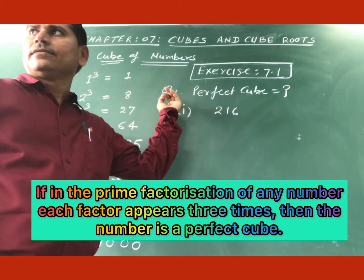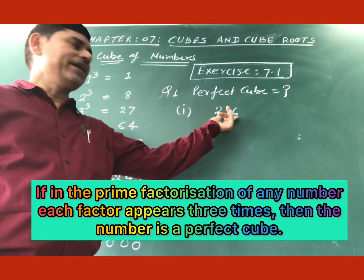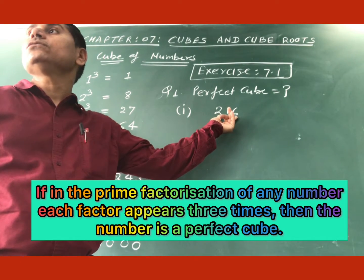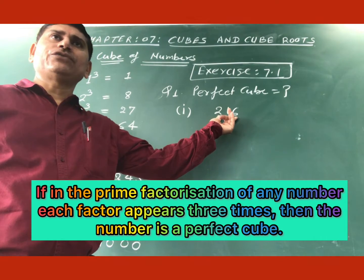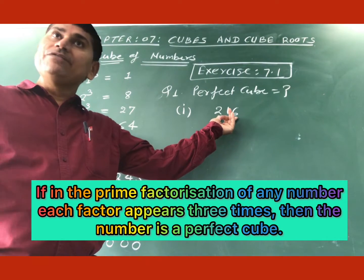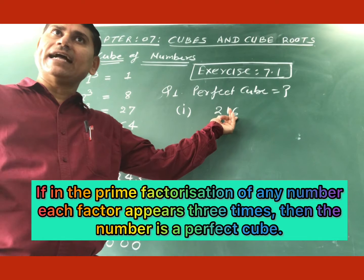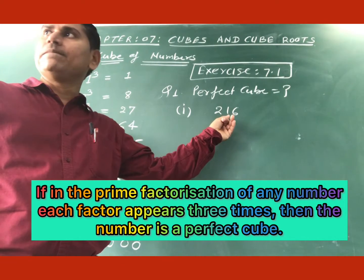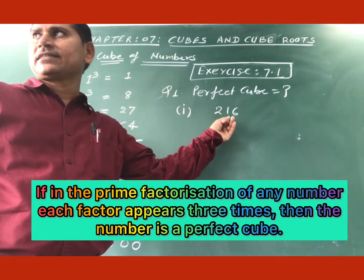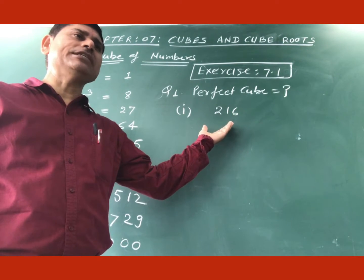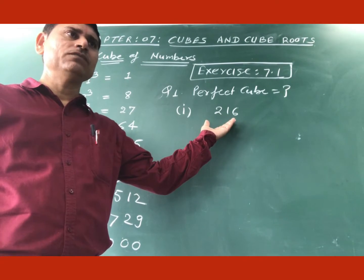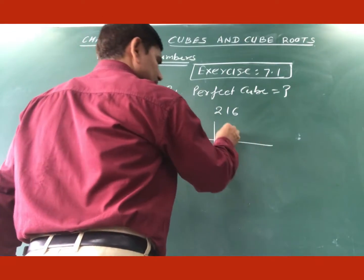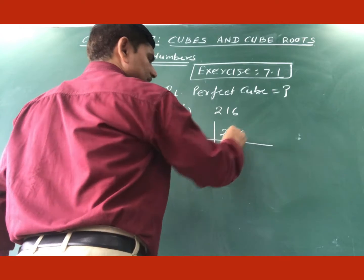Now, in this question number 1, we will tell if this 216 is a perfect cube or not. So how can you tell? First of all, either we have to remember that this is a cube of the number 6, then we can easily say that this is a perfect cube. Otherwise, we will factorize it.